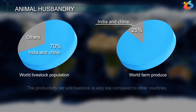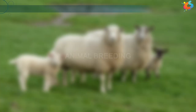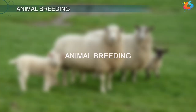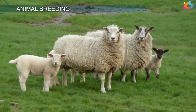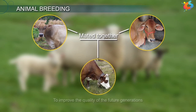Thus, we can infer that the productivity per unit livestock is very low compared to other countries. Therefore, the application of new technologies is very important to achieve improvement in quality and productivity. Animal Breeding is one of the important aspects of animal husbandry, where animals with very good genetic traits are selectively mated together in order to improve the quality of future generations.